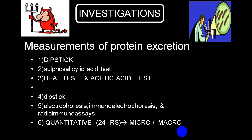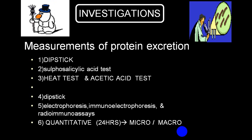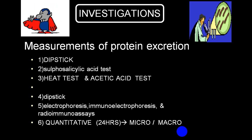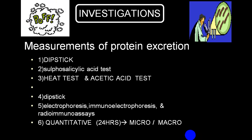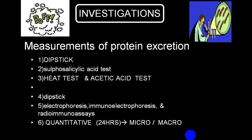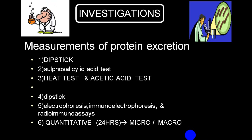For investigation of proteinuria, the most common test selected is the dipstick method, which detects albumin. The standard method is the sulfosalicylic acid test. A third method is the heat test plus acetic acid test. To differentiate the type of protein, one can use electrophoresis, immunoelectrophoresis, or radioimmunoassay. For quantitative detection, urine must be collected for 24 hours, which can also differentiate microalbuminuria from macro and nephrotic variety.